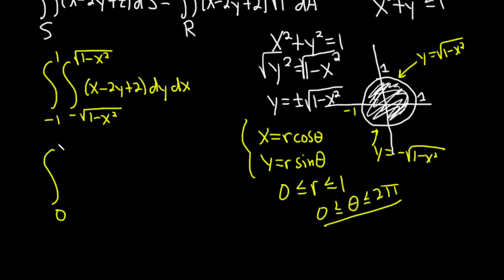So we're going to go from 0 to 2 pi, and we'll go from 0 to 1. And then x is r cosine theta, minus 2y is r sine theta, plus 2. And remember, when we do the polar conversion, we have to have the r here. So it's r dr d theta. So be really careful there with that.